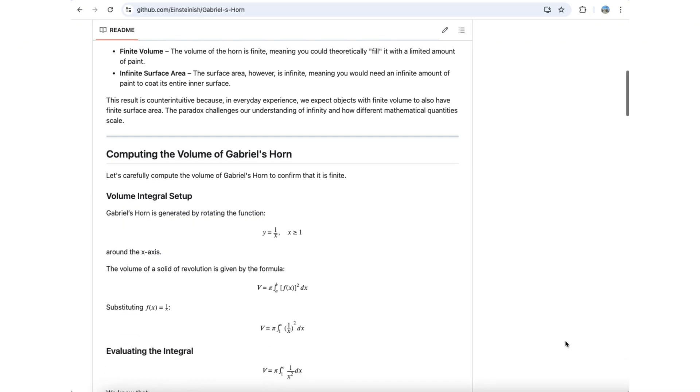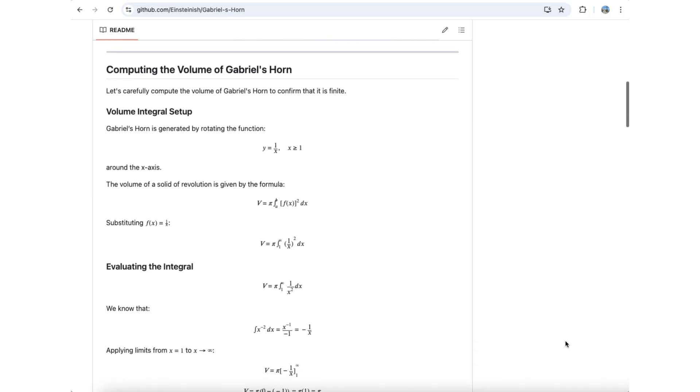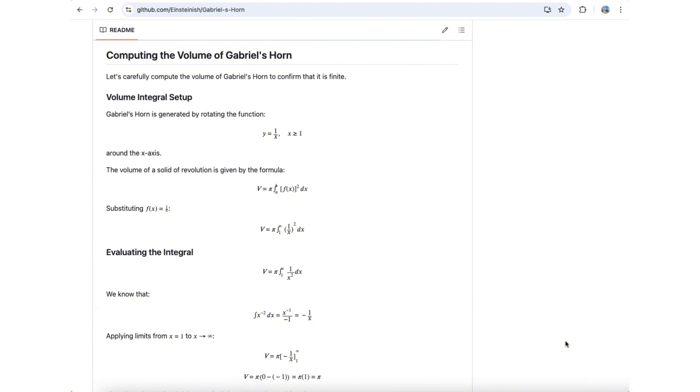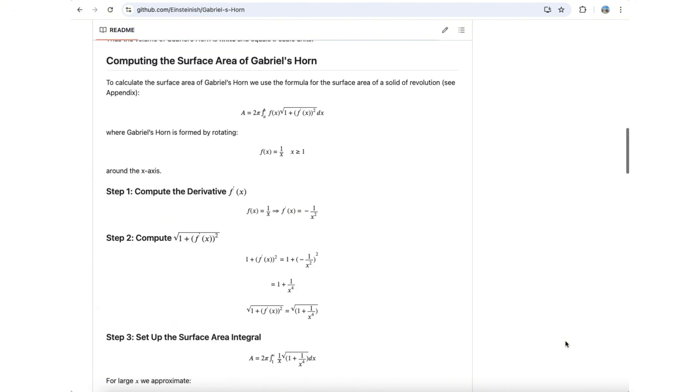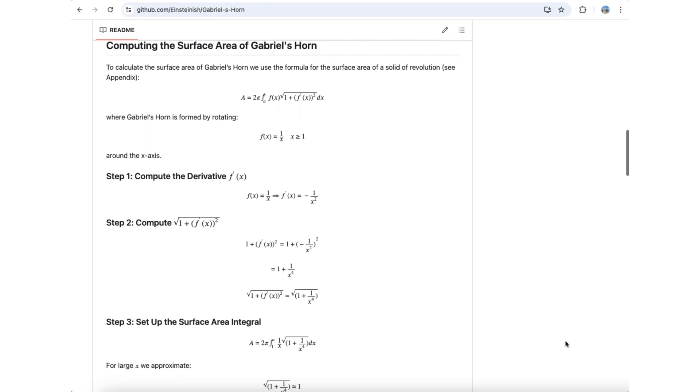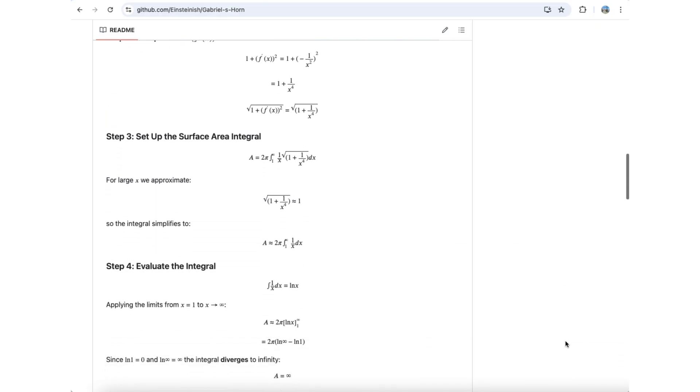This mathematical precision makes the paradox even more striking. How can something be filled with a finite amount of paint but require an infinite amount to coat its surface?